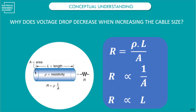The bigger the cross-section of the cable, the less resistance. So in order to overcome the voltage drop occurring in a cable of a certain size, we have to increase its cross-sectional area, which will ultimately reduce its resistance and the corresponding voltage drop. Similarly, the longer the cable, the more the resistance and the more the voltage drop.